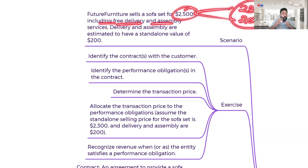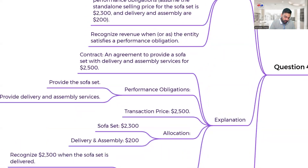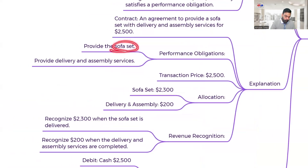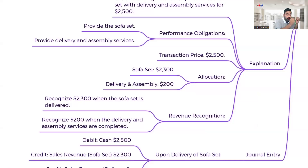Now let's apply the five-step model. Step one — identify the contract: the contract is to deliver a sofa set and to assemble it, with a total contract value of rupees 2,500. Step two — performance obligations: first, to deliver the sofa set; second, to provide delivery and assembly service. Step three — transaction price: rupees 2,500. Step four — allocate: rupees 2,300 for the sofa set and rupees 200 for delivery and assembly.